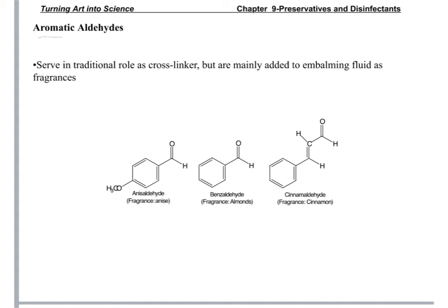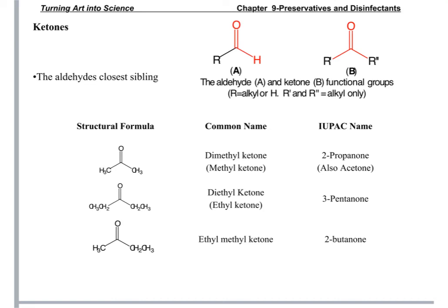Aromatic aldehydes have a benzene ring attached and carry a distinct odor. You can improve the fragrance of embalming solutions by incorporating some of these aromatic aldehydes. For example, anisaldehyde smells like anise or licorice, benzaldehyde has an almond scent, and cinnamaldehyde smells like cinnamon — all more favorable scents than what you typically encounter in your line of work.